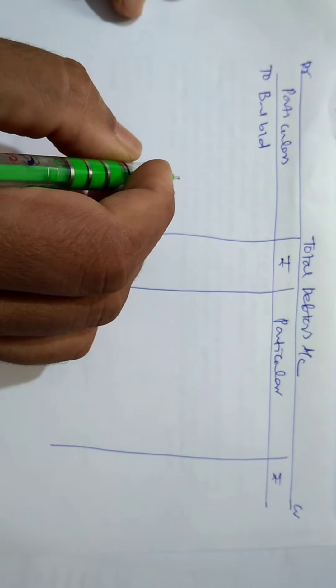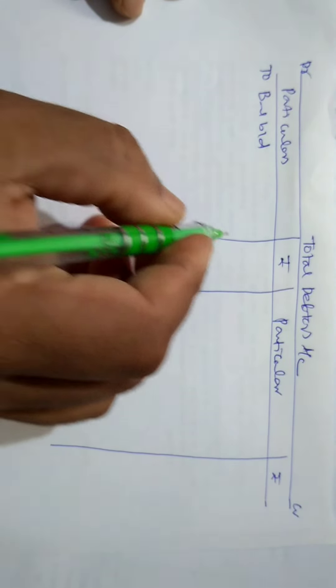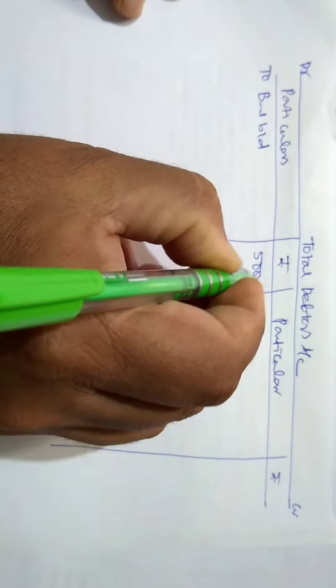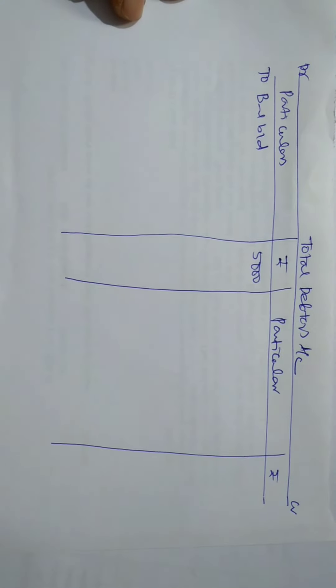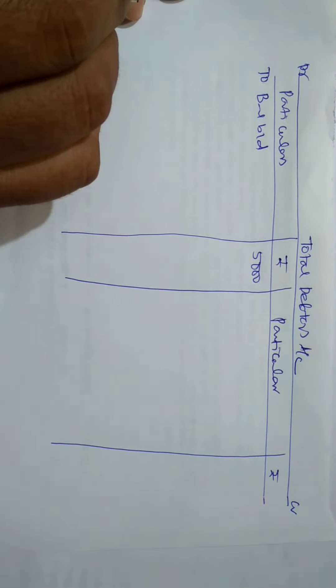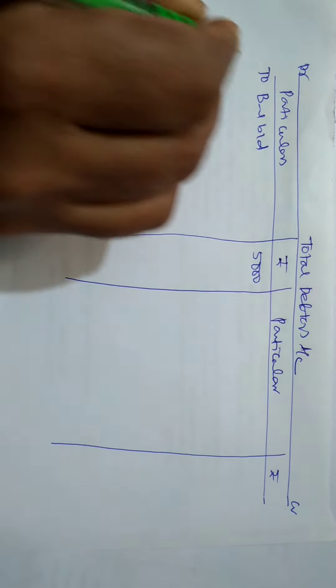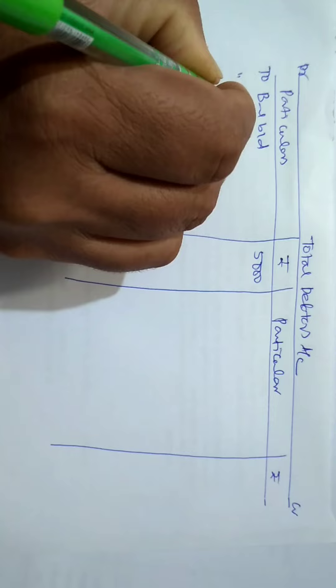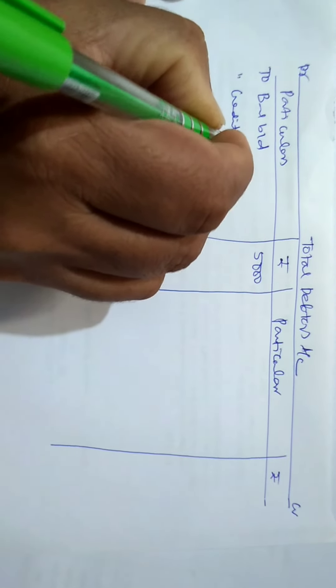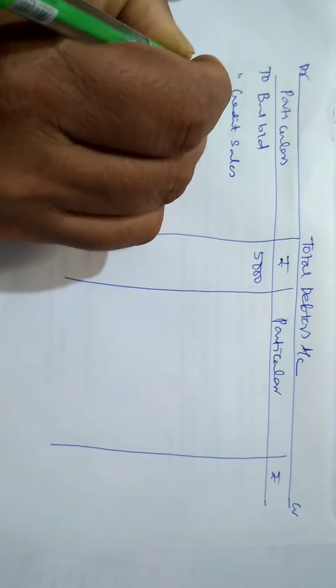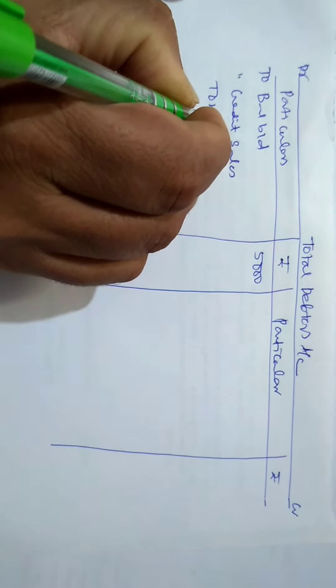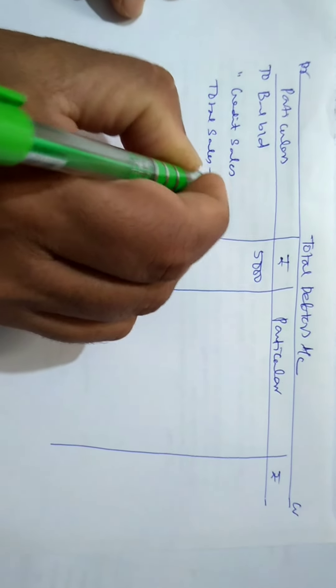The amount given is 5,000, opening balance is 5,000 and they have given total sales Rs. 35,000 and cash sales Rs. 5,000. So, we must take credit sales. Credit sales is nothing but total sales minus cash sales.